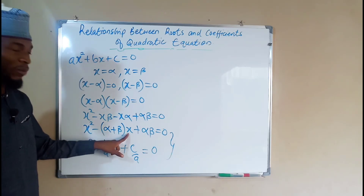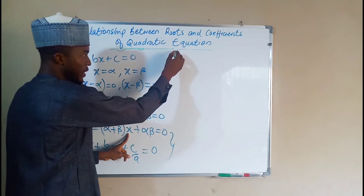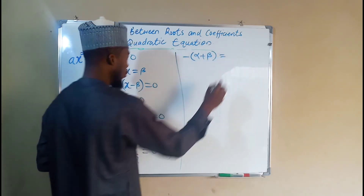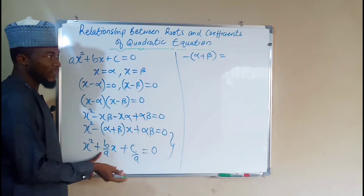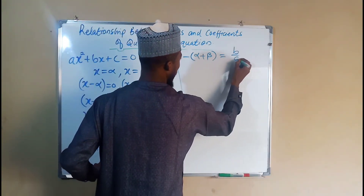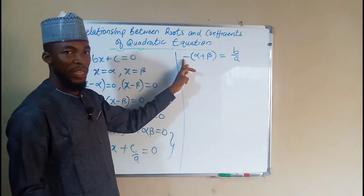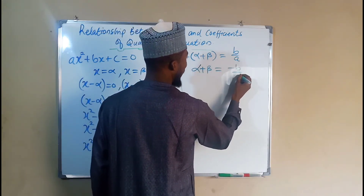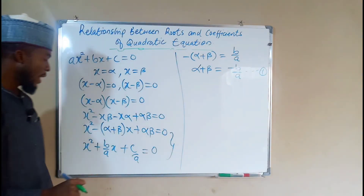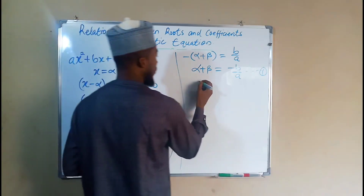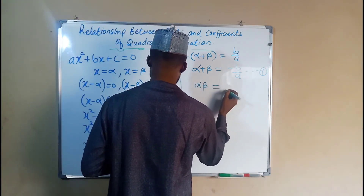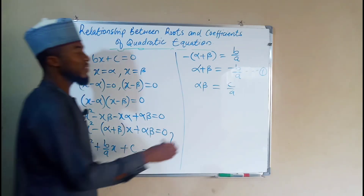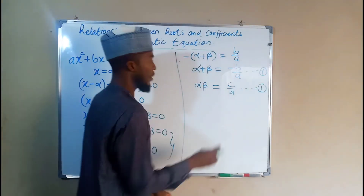Now we relate the two equations. The coefficient of the middle term is -(alpha + beta), and this equals b/a. Dividing both sides by -1 gives us alpha + beta = -b/a — this is equation 1. For the constant term: alpha times beta equals c/a — this is equation 2.